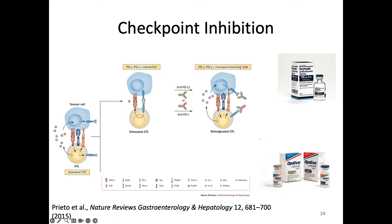PD-1 is part of exhaustion, and the PD-1 response grows over time. At the beginning when cancer first starts, your T cells are doing great. Then they start getting some PD-1 on them, start getting exhausted, and that grows over time — and now the cancer can win. So it does change very much over time.